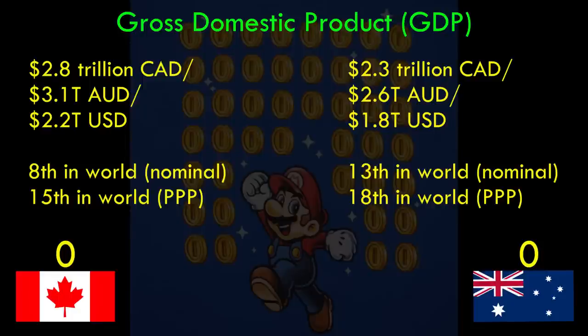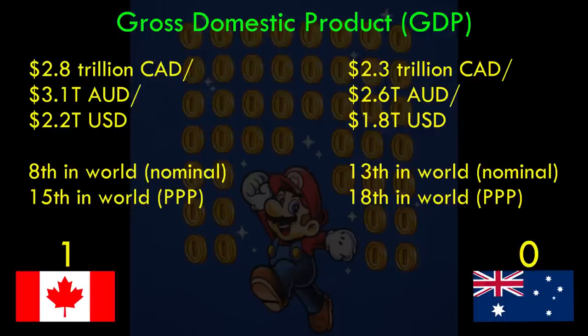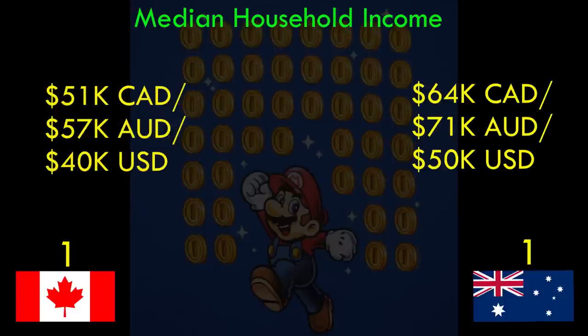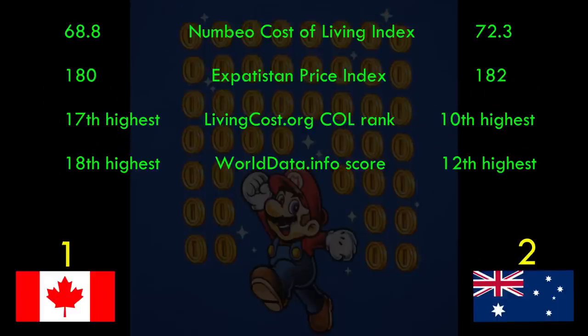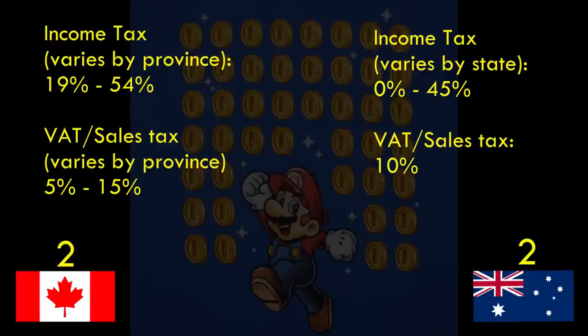Starting with economic indicators: Canada has a larger GDP than Australia, ranking eighth in the world in nominal GDP and fifteenth in purchasing power, while Australia ranks thirteenth and eighteenth. However, in terms of GDP per capita, Australia is higher in both nominal and purchasing power, ranking fifteenth versus eighteenth for Canada. For overall household income, Australia also ranks a decent amount higher. For housing cost and cost of living, Canada is a little bit lower. In terms of taxes, Canada is very high with much higher income taxes than Australia and a higher VAT as well.